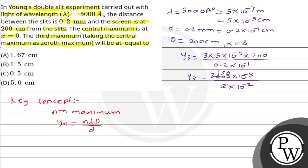Computing: 3 × 5 × 10⁻⁵ × 200 gives 1500 × 10⁻². Dividing by 0.2 × 10⁻¹ gives 1500 × 10⁻³ centimeter, which equals 1.5 centimeters. So the third maximum from the center is at 1.5 centimeters. I hope you have understood it well — best of luck.